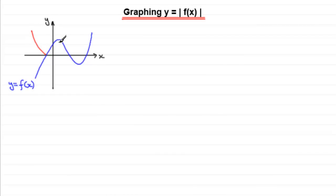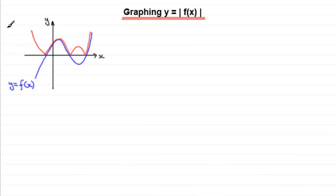This part of the curve gets mirrored in the x-axis. The part where y values are already positive stays exactly the same. I'm going to draw the result slightly to the side so you can see the red graph. The negative part gets mirrored in the x-axis, and the positive part stays the same — giving a curve that is the graph of y equals the mod of f(x).